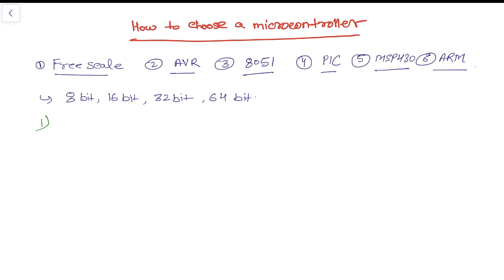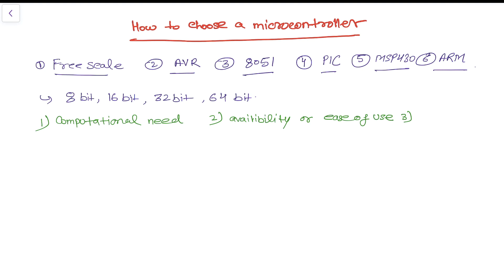The designer must follow three basic criteria when selecting a microcontroller. The first is computational need — how much processing power do you require. The second is the availability of software and hardware development tools, or the ease of use. The third is reliability. After making these decisions, you can then consider the pricing factor and the form factor.